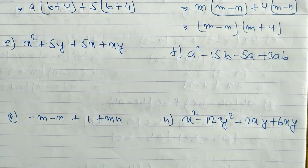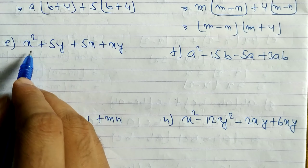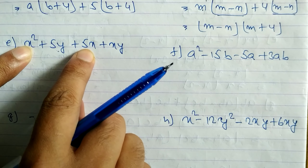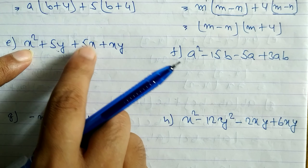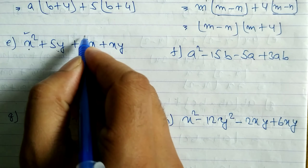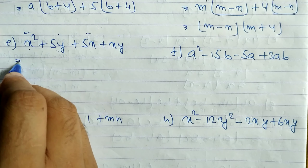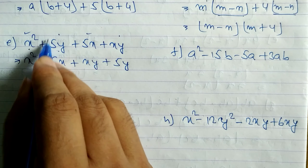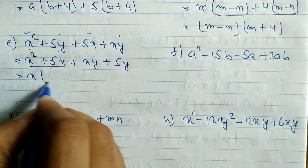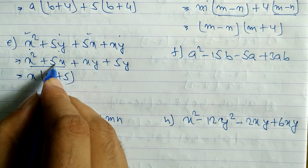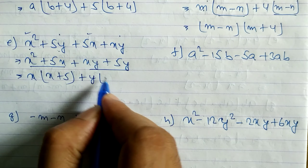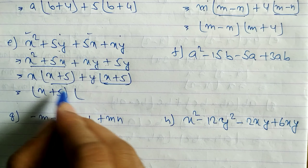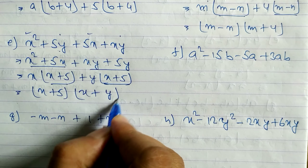Now look at question 4e. Here is x² and 5y — there is nothing common, so we cannot take anything common directly. We rearrange: take first and third terms together, and second and last together. Arrange as x² plus 5x plus xy plus 5y. From the first two terms, x is common, remaining x plus 5. From the last two terms, y is common, remaining x plus 5. Now x plus 5 appears in both, so we take x plus 5 as common, remaining x plus y. The answer is (x plus 5)(x plus y).